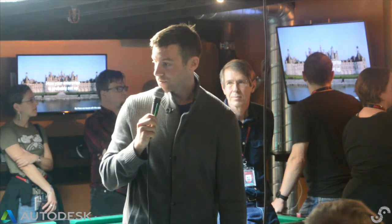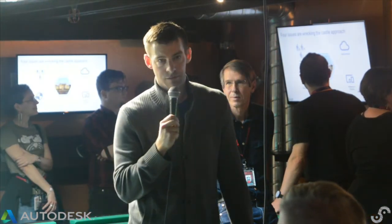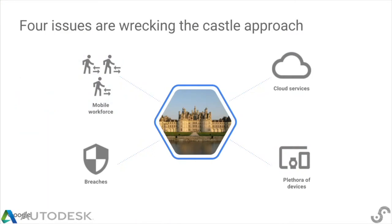What are the issues with this castle approach? There are four main issues. One, you've got mobile workforces, lots of contractors. Google certainly does — we've got 57,000 employees and lots more contractors than that who shouldn't have access to everything. Also, Googlers themselves shouldn't have access to everything. You've got lots of breaches in the news, cloud services from us and other guys, and a plethora of devices — not just laptops, but iPads and smartphones.